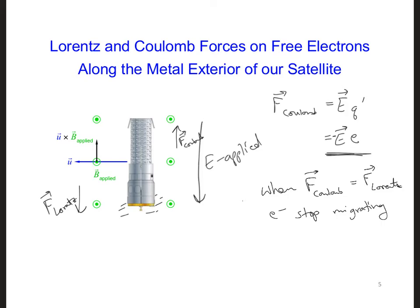So at this point, once they stop migrating, we can equate the Coulomb and the Lorentz forces in the metal exterior of the satellite. So we can say minus E electron, that's for the Coulomb force, is equal to minus E for the Lorentz force U cross B. And then we can cancel the negative signs and the electric charge, and that gives us E is equal to U crossed with B.